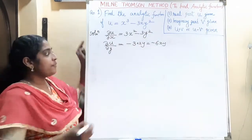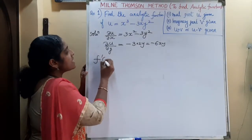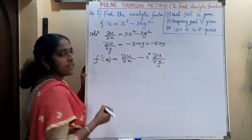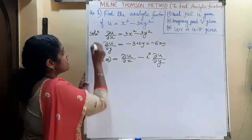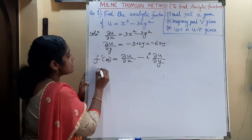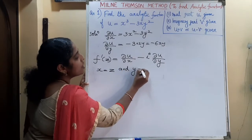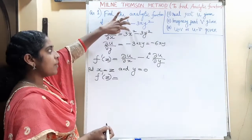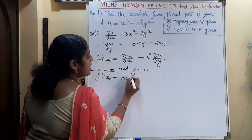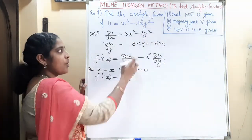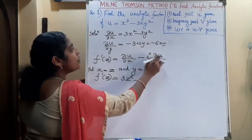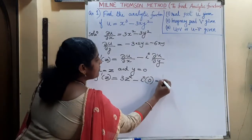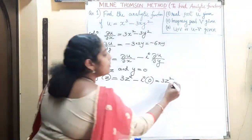Since U is given, we use F'(z) = ∂U/∂X − i·∂U/∂Y. In step 2, substitute X = Z and Y = 0: ∂U/∂X becomes 3Z² − 3(0)² = 3Z², and ∂U/∂Y = −6XY becomes 0 when Y = 0. So F'(z) = 3Z², which is our new function G(z).